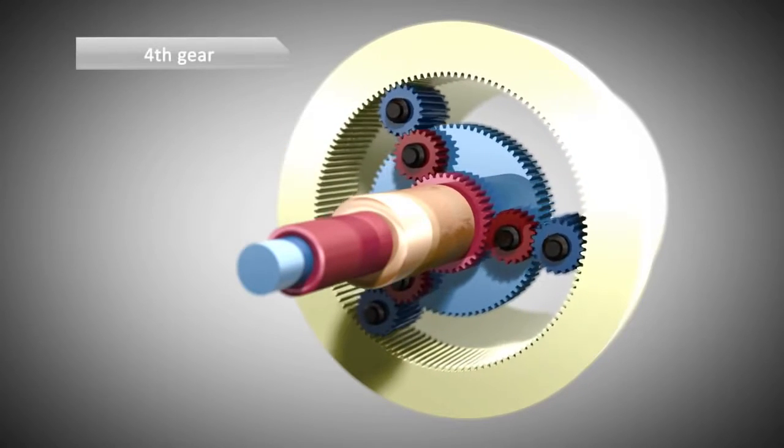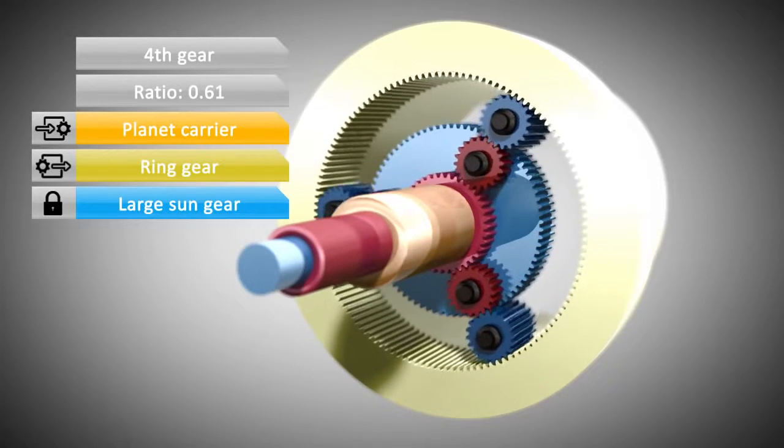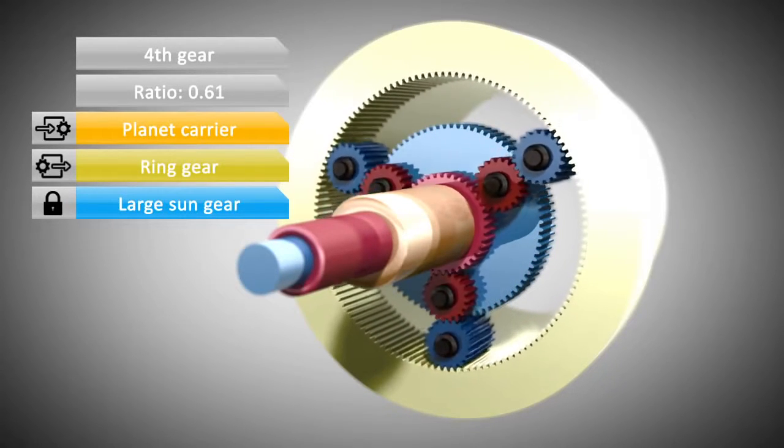In 4th gear, the planet carrier is the input. The large sun is held stationary and, again, the ring gear drives the wheels of the car.